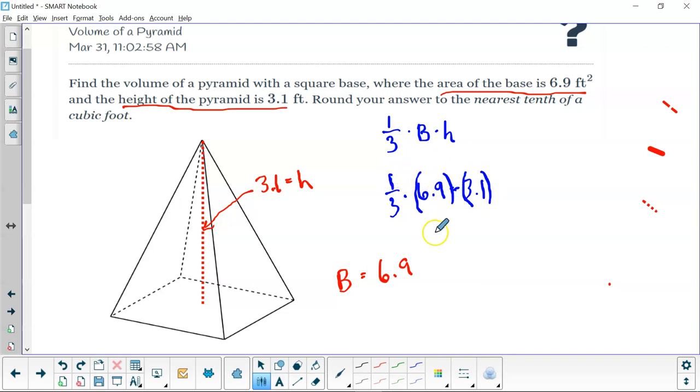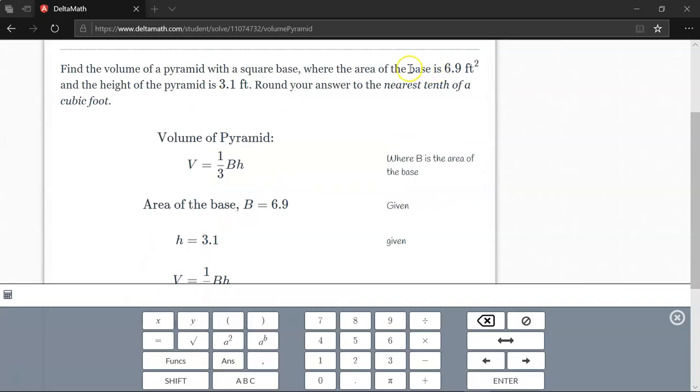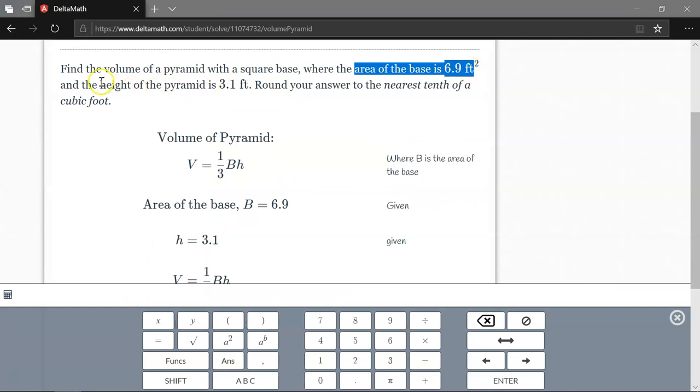And let's go over to delta math and stick that in the calculator and we'll get our answer. Okay, so here we are at delta math. We've got area of the base is 6.9, and we've got height of the pyramid is 3.1. And we just plug those into the formula.